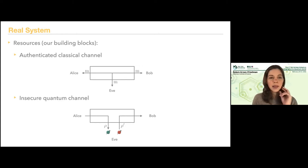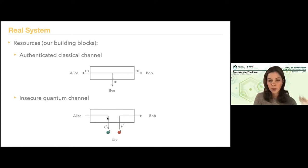In addition, we have the insecure quantum channel. I can send a quantum state from Alice to Bob. Alice can input a state, but now Eve can just take this state — let's say Alice sends a qubit and Eve can put in whatever state she wants (call it ρ'), which then goes to Bob. This is an insecure quantum channel.